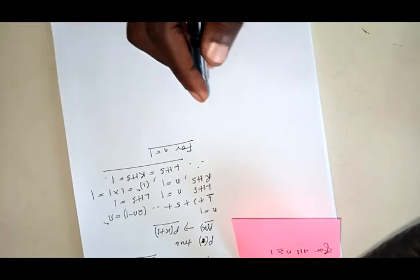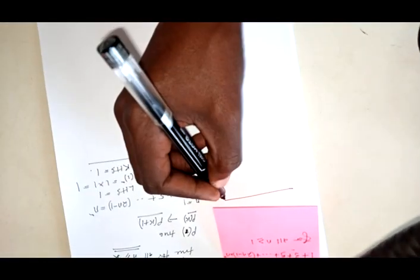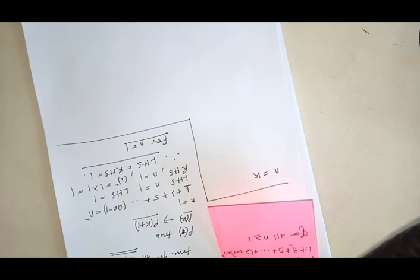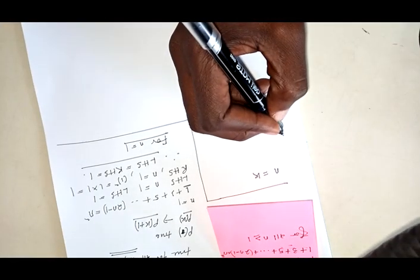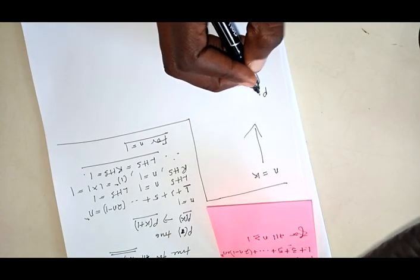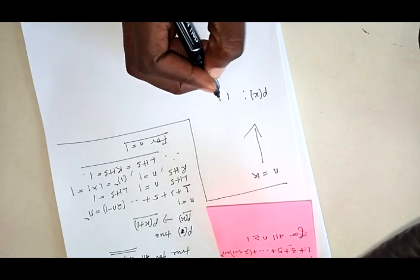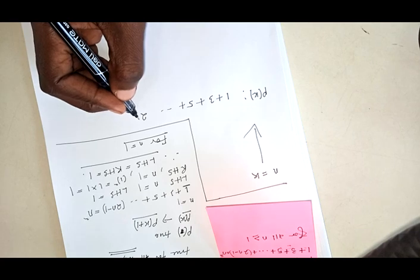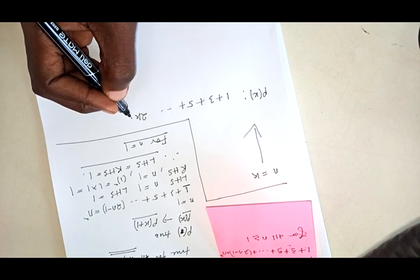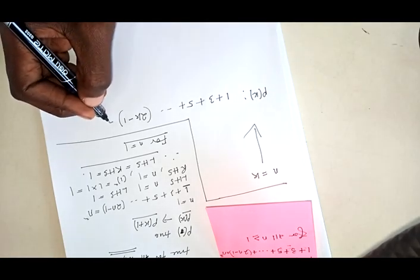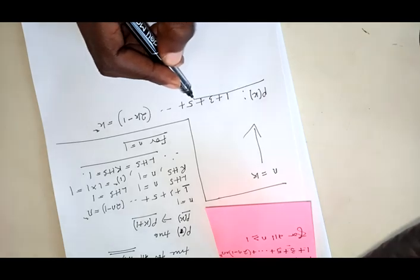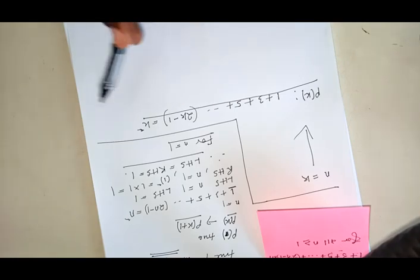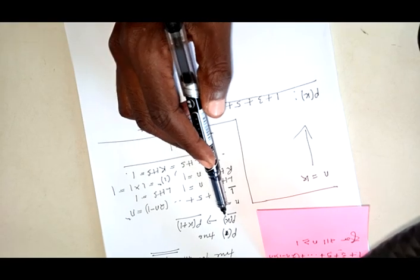Now, what if we make another proposition? We assume that n is equal to some value k. So for P(k), this is going to be: 1 plus 3 plus ... plus (2k − 1) equals k squared. This is a very important statement because this is where we base our argument in proving that P(k) implies the next case.